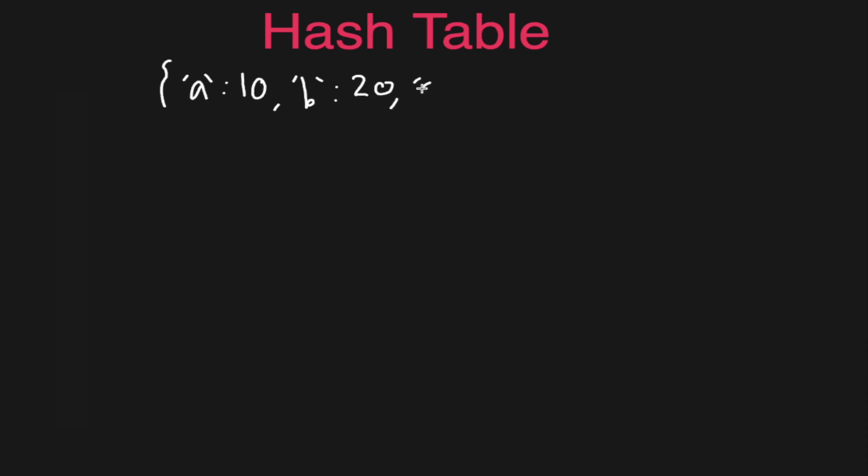And then we have the character or key 'c' and we'll map that to 30. Essentially, this is just a basic object in JavaScript or a hash table where we got the key as a character and the value as a number.